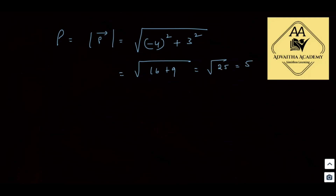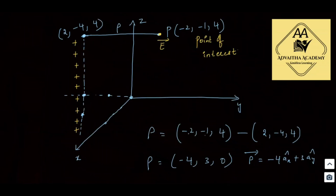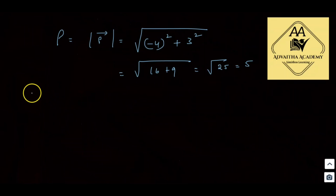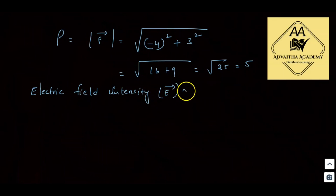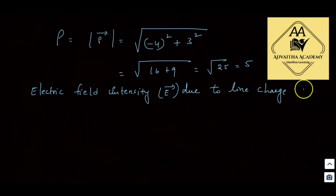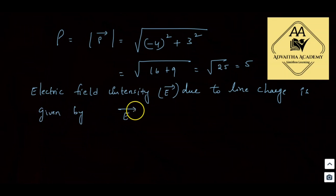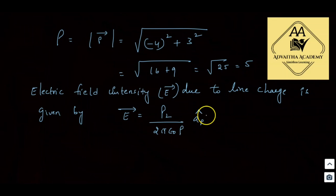Now, the electric field intensity formula derived in the last video: E bar due to line charge is equal to rho L divided by 2 pi epsilon naught times rho, times a_rho cap, in volts per meter.